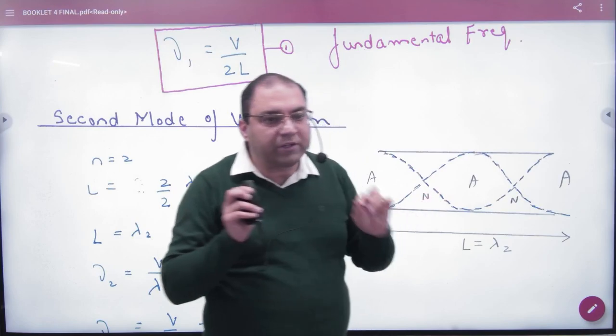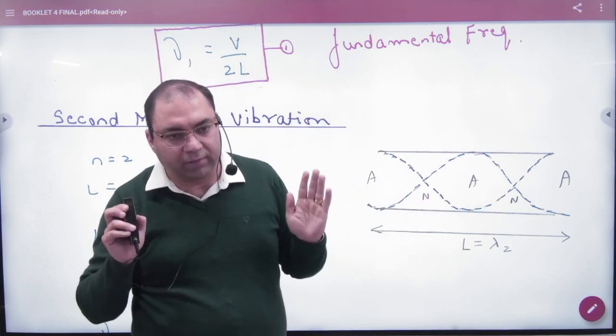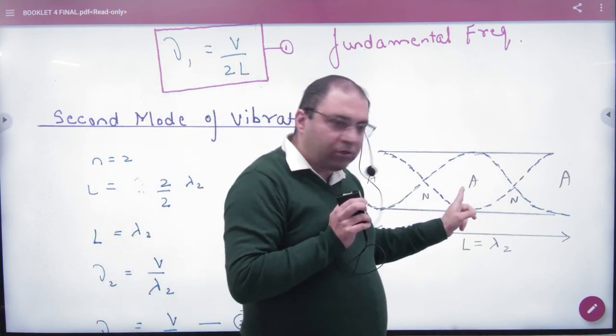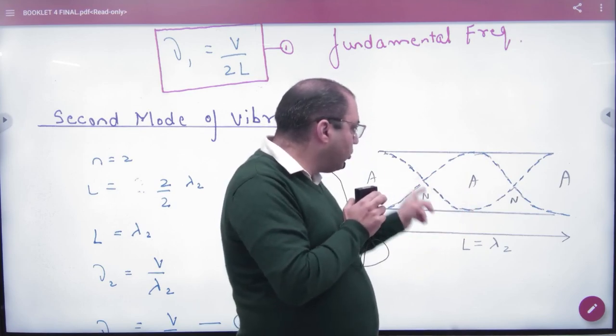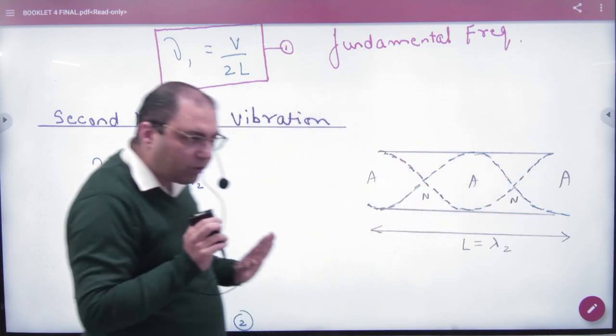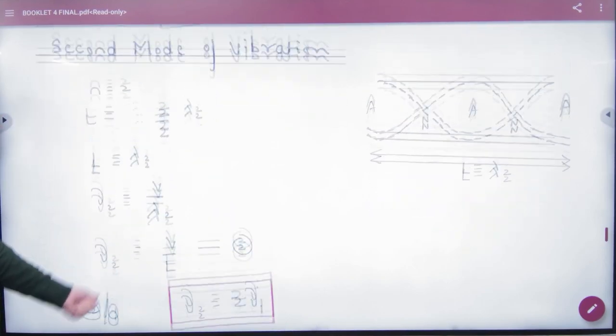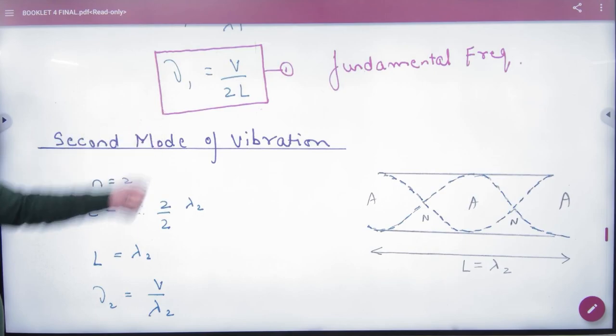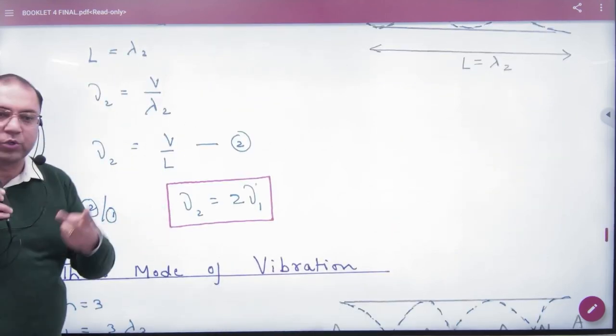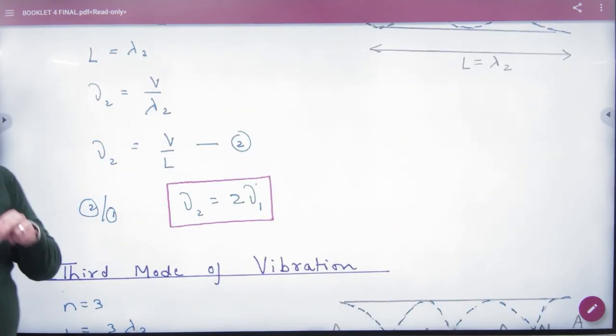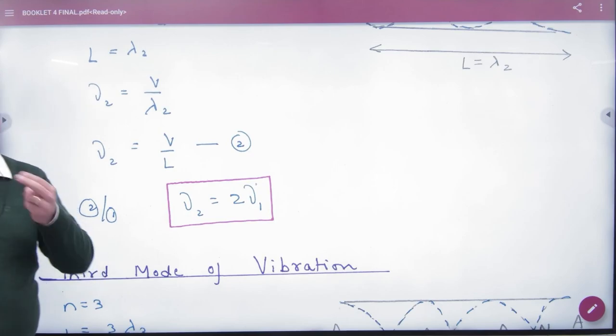Lambda by 4, lambda by 4. Because in the corner there is an anti-node, the node is not possible. So one loop is extra in the middle. So anti-node, node, anti-node, node and anti-node. Here is lambda 2L. Nu 2 is V by lambda 2. Nu 2 comes, fundamental frequency is nu 1 comes. We divide both, nu 2 comes 2 into nu 1. So the second frequency which is the first frequency is twice.